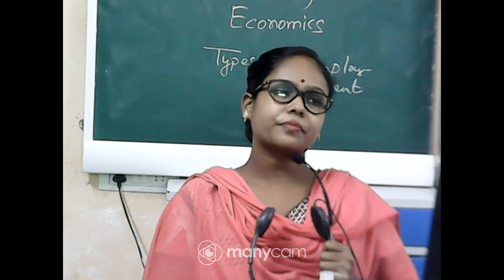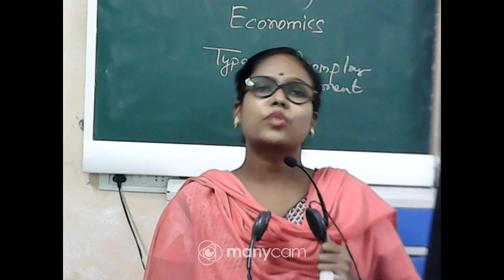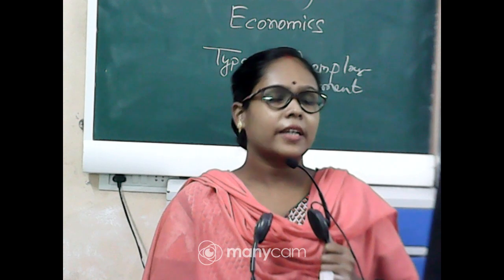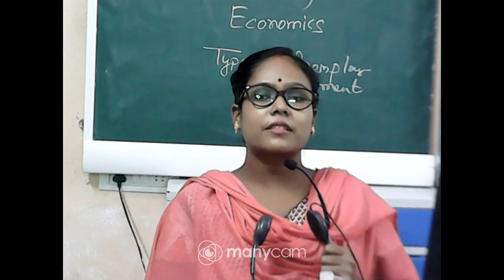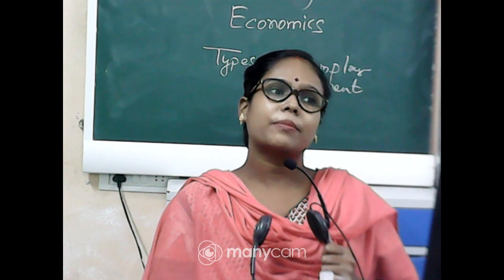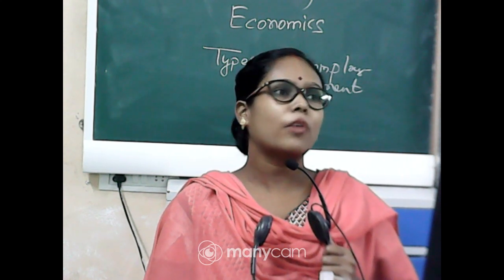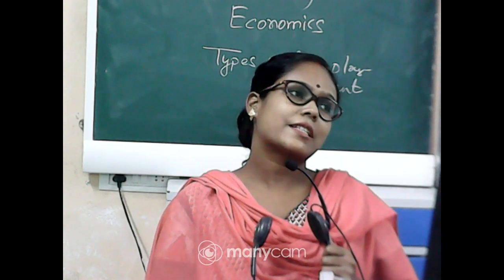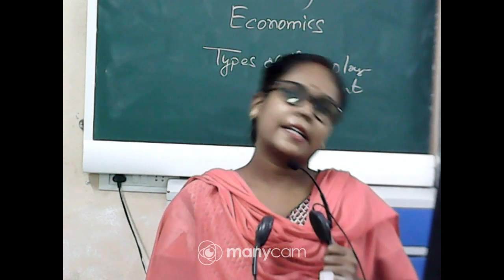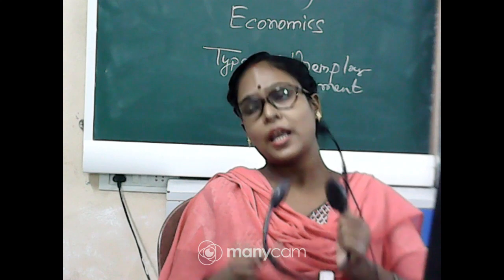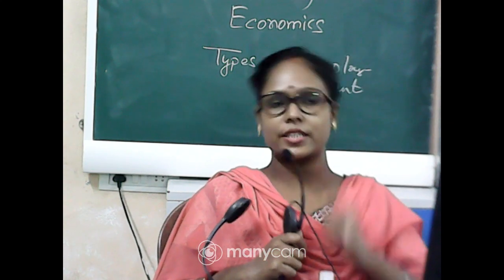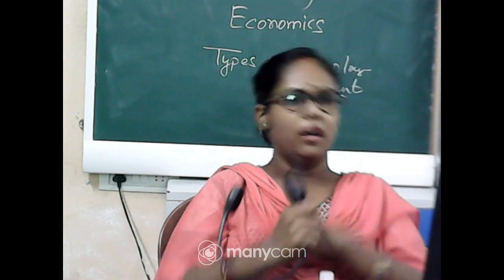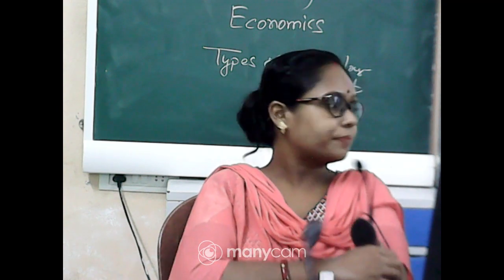For example, in one field only two workers are needed, but there are five workers already engaged. The remaining three workers — if they work or not, there will be no effect on total production or total productivity. So these three persons are the disguisedly unemployed. This disguised unemployment is actually seen in the agriculture sector and obviously in the rural area.